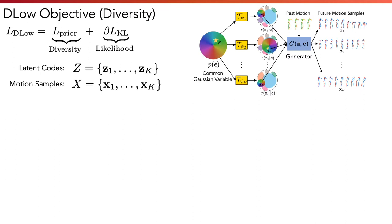Now let's take a closer look at the DLow objective. I will first talk about the prior term, which is used to promote sample diversity. Here, let's briefly recap the DLow sampling process. We first draw a common Gaussian variable epsilon and transform epsilon with k different affine transformations to k latent codes.